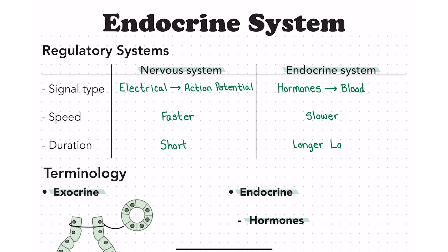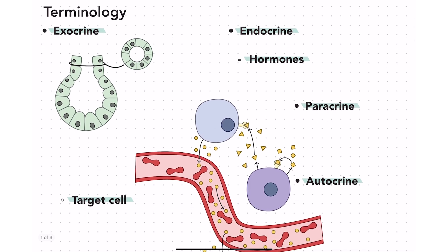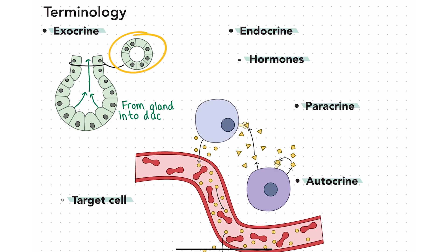Now that we have a basic understanding of the regulatory systems, let's focus on the glands, their secretions, and how those secretions find their target cells. The most basic type of gland that everyone is familiar with is called an exocrine gland. In an exocrine gland, the glandular cells will secrete their product and it will travel out through a duct — a hollow tube-like structure typically made up of cuboidal cells — carrying that secretion to the surface of the body or the lumen of whatever organ the exocrine gland is secreting into.